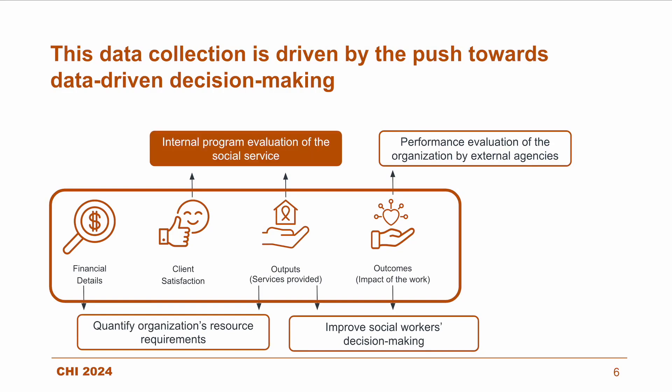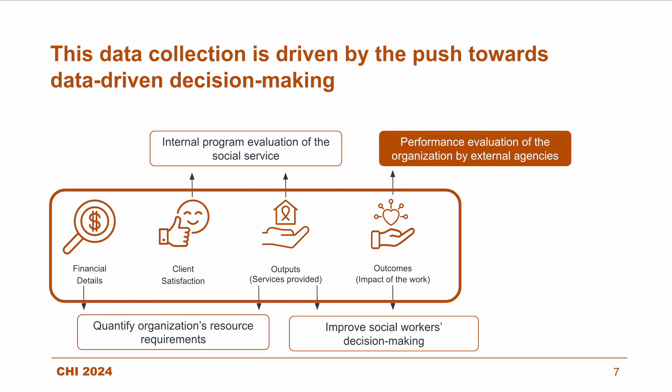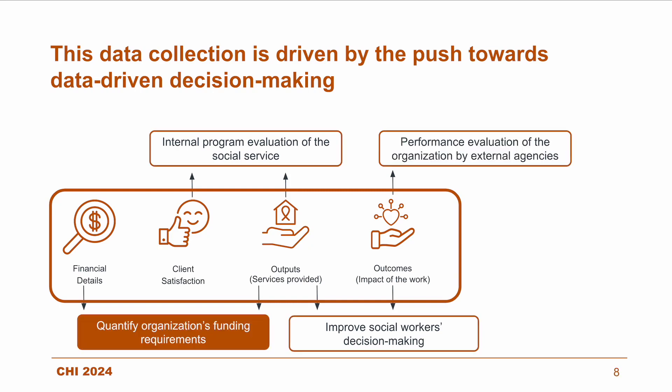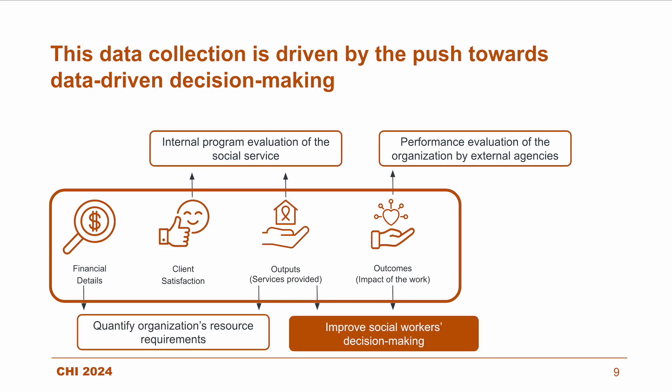For instance, client satisfaction and outputs data is utilized for internal program evaluation, whereas external agencies use the outcomes data for performance evaluation. Similarly, financial details and outputs data is used to quantify the organization's funding requirements, while social workers use the outputs and outcomes data to improve their decision-making.